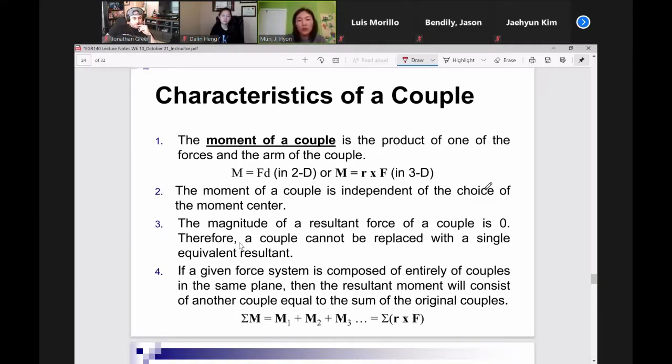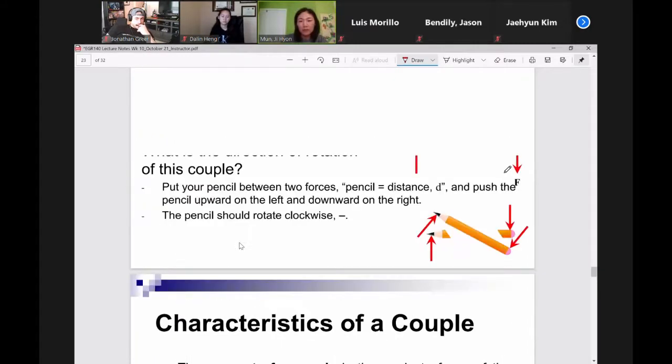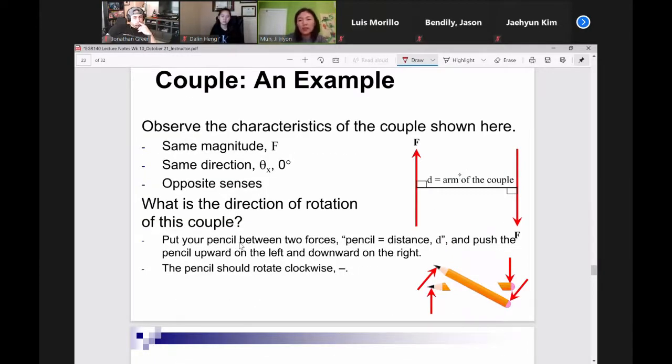So the first one says, the moment of a couple is a product of one of the forces and the arm of the couple. Now what is this arm of the couple? Going back to the picture in the previous slide, this perpendicular distance between the two forces of a couple, the technical or the statics term here is the arm. But we can just continue to call it the perpendicular distance. But when it comes to couples, they call it the arm. Okay, so that is the arm of the couple.